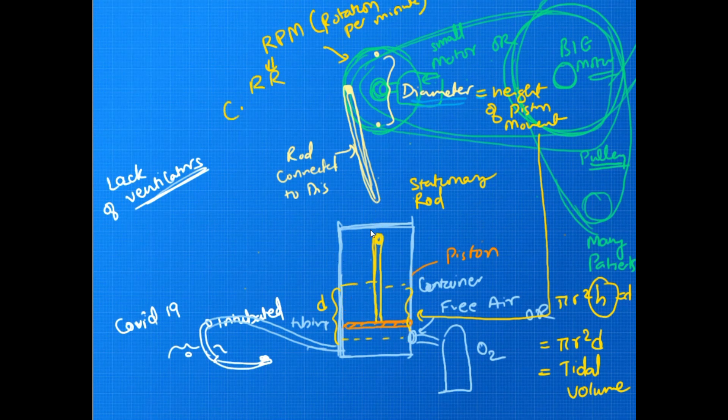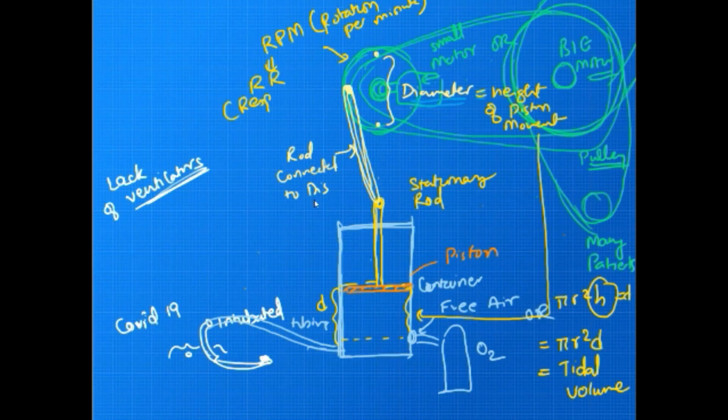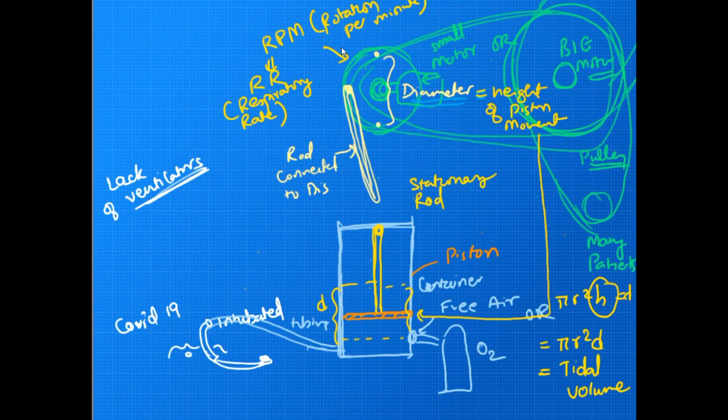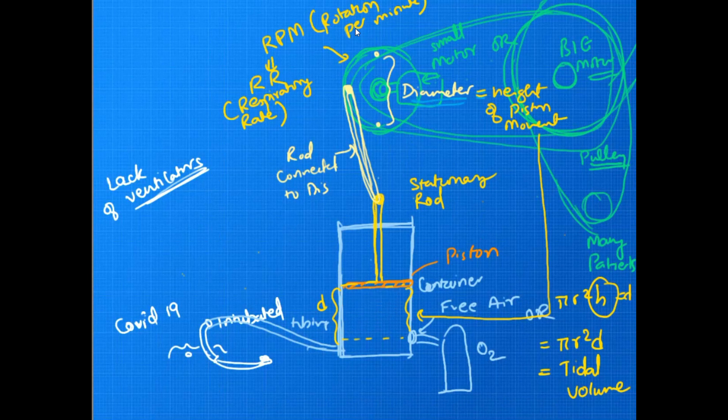The respiratory rate will be decided by the rotation per minute of this disc. So two important parameters we will be able to control: one is tidal volume and one would be the respiratory rate.